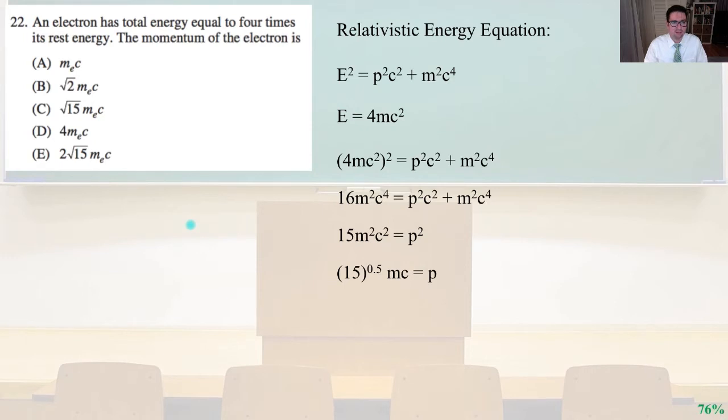E equals mc squared, that's our rest energy. 4 times that, so 4mc squared. That quantity squared equals p squared c squared plus m squared c to the fourth. Therefore, 16m squared c to the fourth equals p squared c squared plus m squared c to the fourth. So, let's do some algebra. 15 square root mc equals p. So, that is letter C.